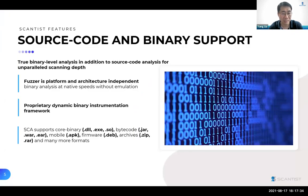Now let me show you some unique capabilities of Scantist's offering. First, leveraging our unique dynamic binary instrumentation framework, our smart fuzzer can perform security testing on binary programs directly without emulation at native speed, and we can support binary formats across different operating systems and architectures. Secondly, Scantist's SCA can find vulnerabilities in both source code and binary formats, which include firmware, APK files, and even Docker containers. Particularly, we can perform partial vulnerability function matching for C language and obfuscation support for JAR binaries.